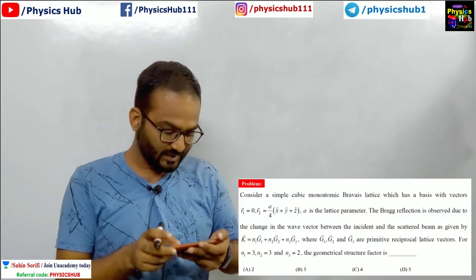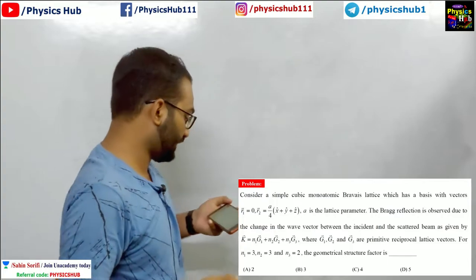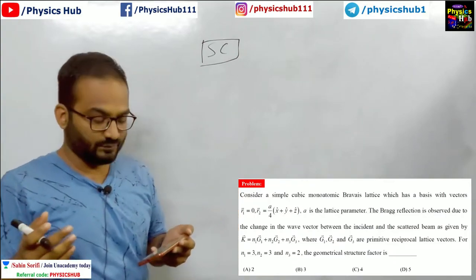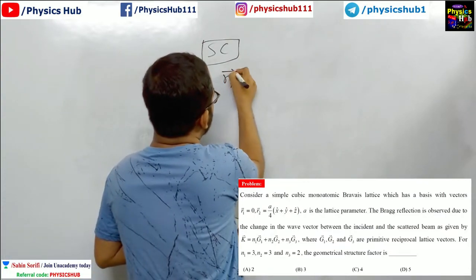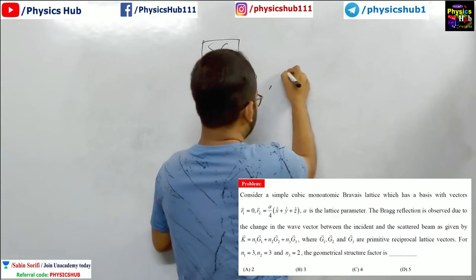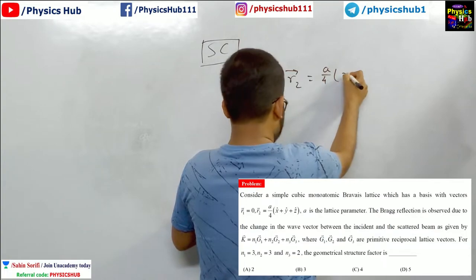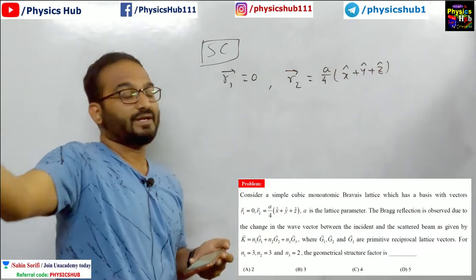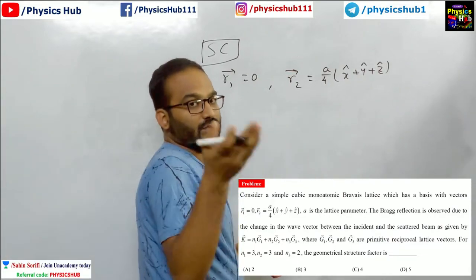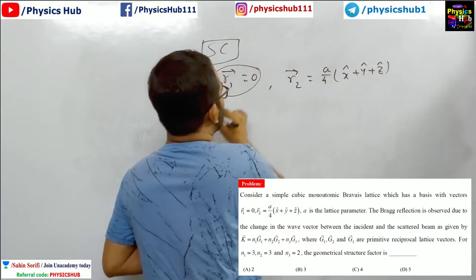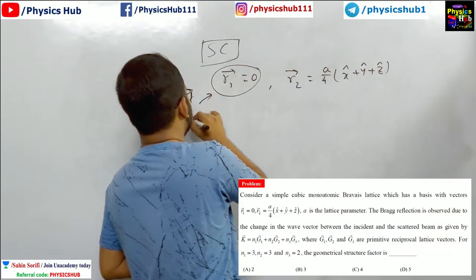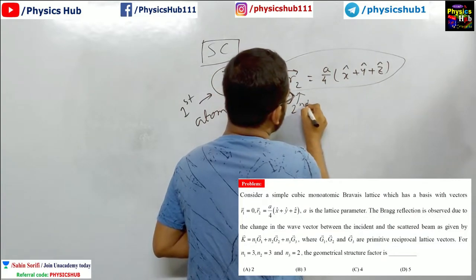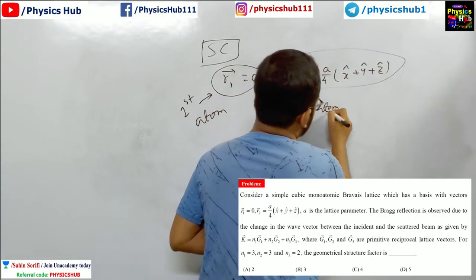So we have a question like this: Consider a simple cubic monoatomic Bravais lattice, which has a basis with vectors. One vector r₁ equals 0, r₂ equals a/4(x̂ + ŷ + ẑ). So as I told you, i was extending from 1 to n, so i is 1 and 2 basically. This is the position vector of the first atom and this is the position vector of the second atom. So you see u, v, w for both the atoms.